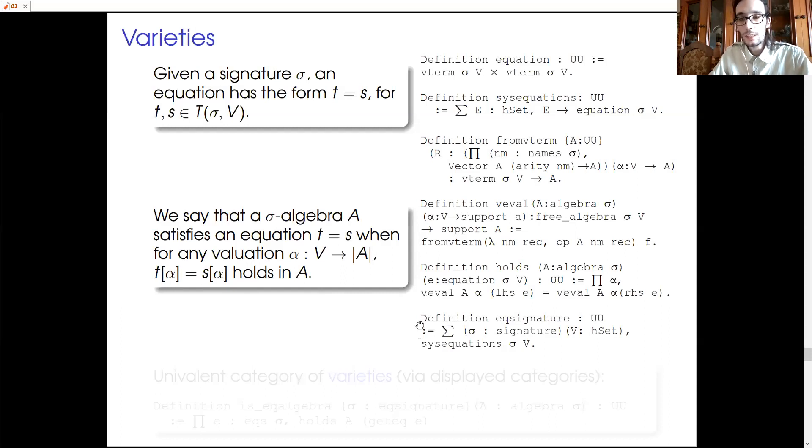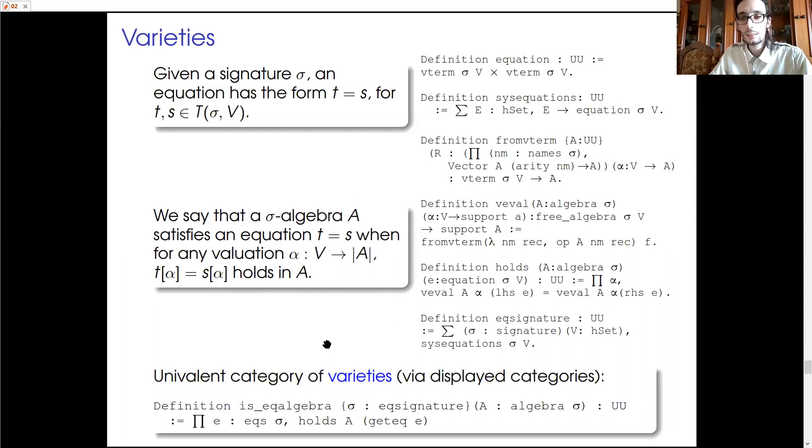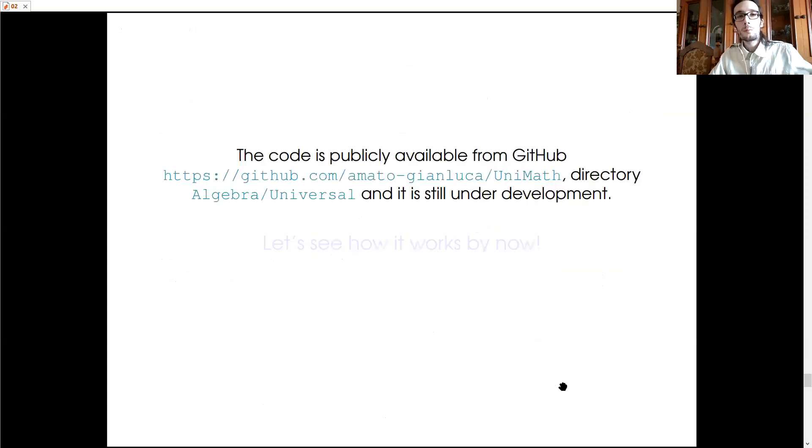But now we can easily define the univalent category of varieties. And varieties are just algebras that satisfy a system of equations. And again, to construct this category, we use the tools of displayed categories. So things go quite straight.